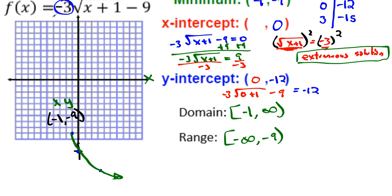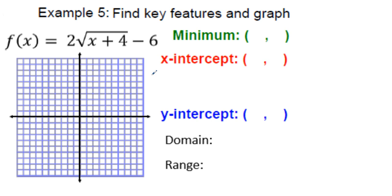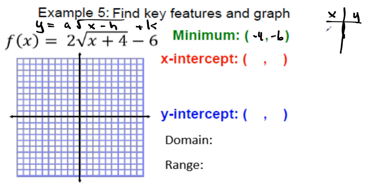Example 5 — one more together. Writing the general form, we can immediately identify the vertex as (−4, −6). The a value is positive, so it opens upward. Make the table: start with (−4, −6). Going up one, up three for x-values, and the a value determines how you count on the y-side — count by twos going up.